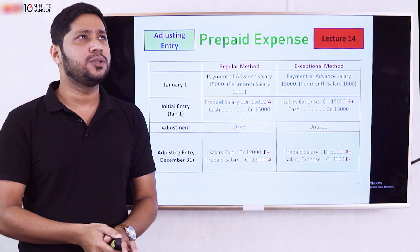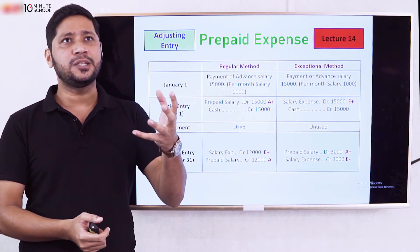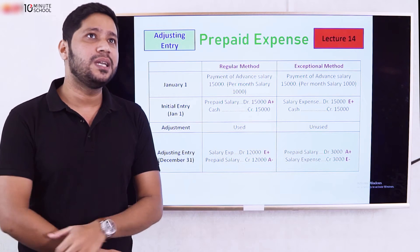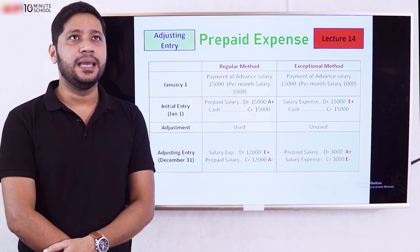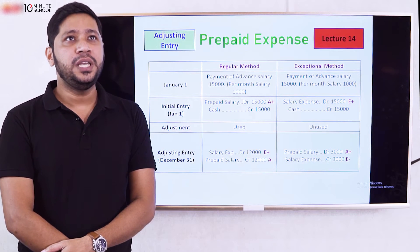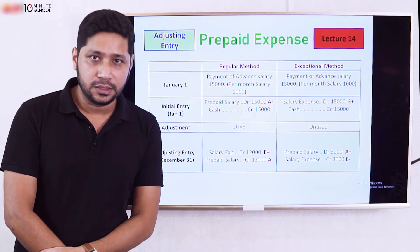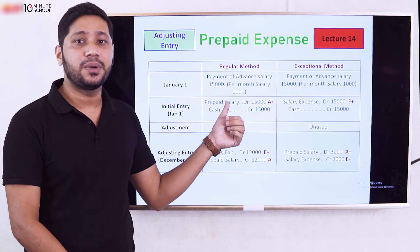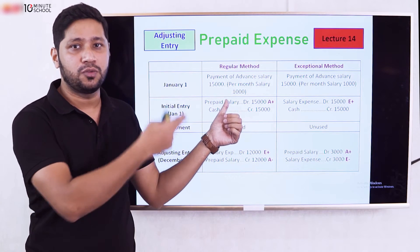Let's look at the trial balance. The trial balance shows the prepaid rent balance. If the regular method was followed, we proceed with the adjustment entry accordingly.